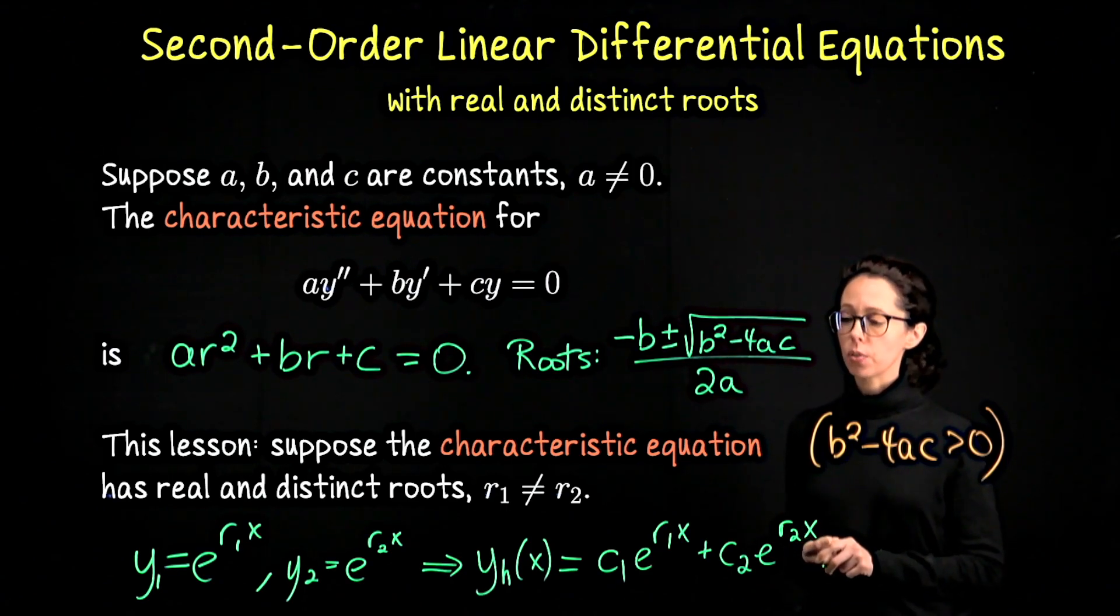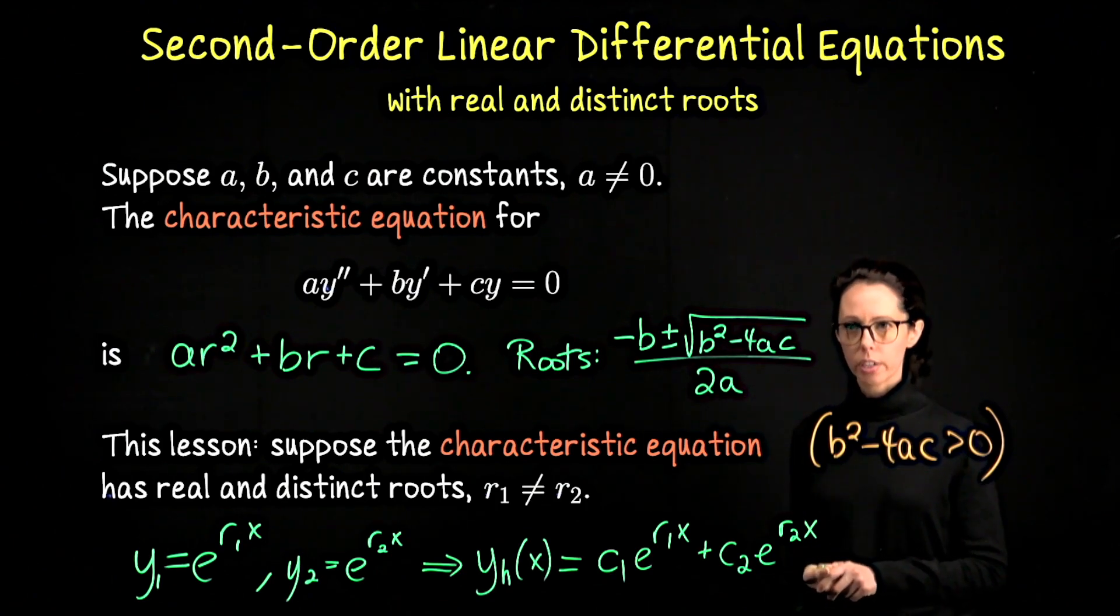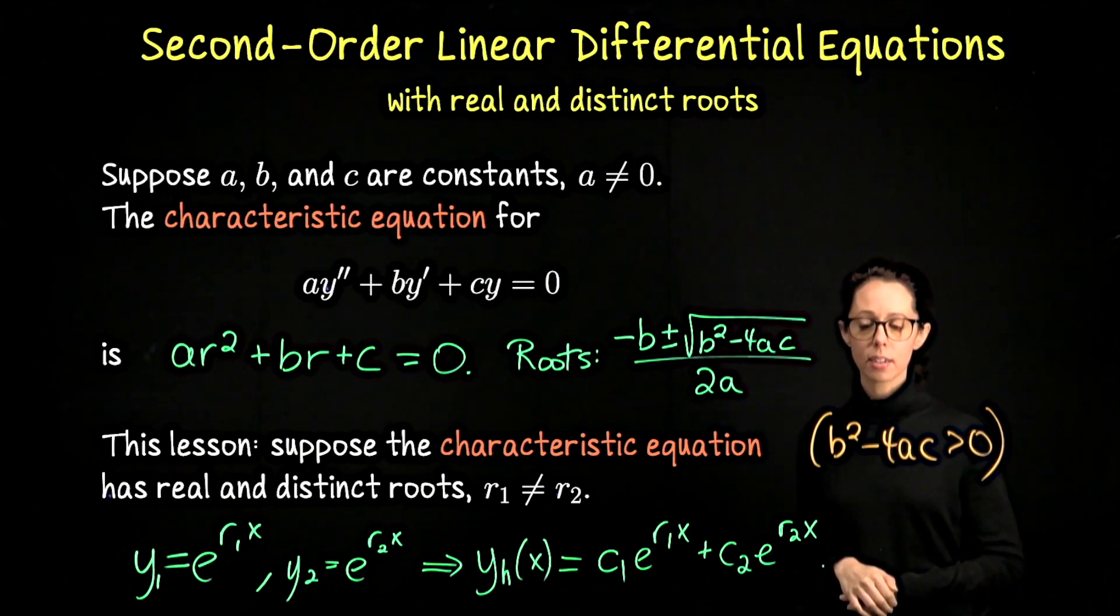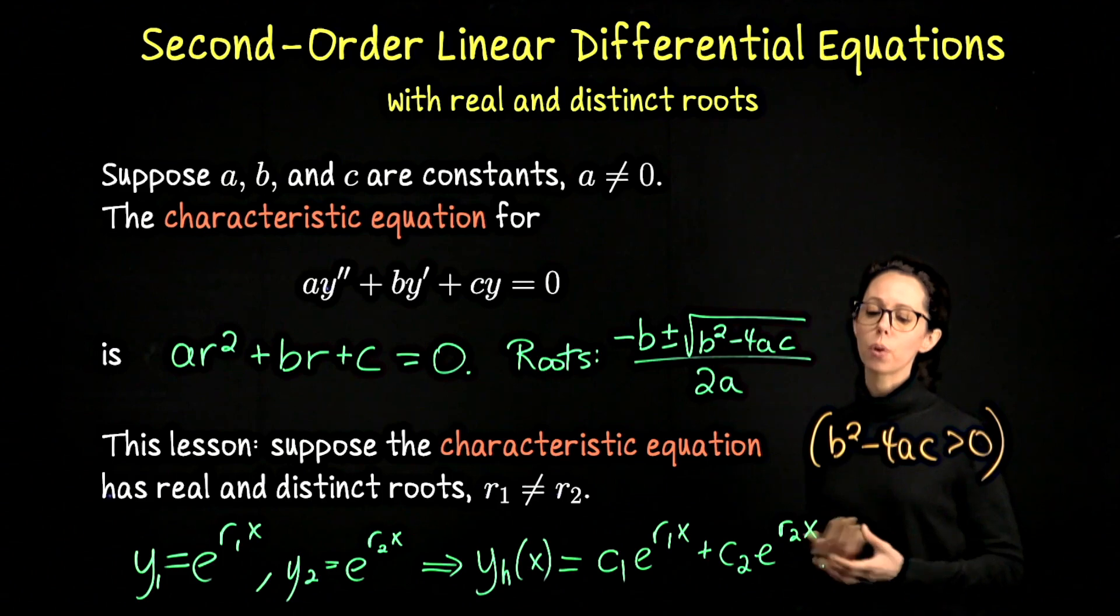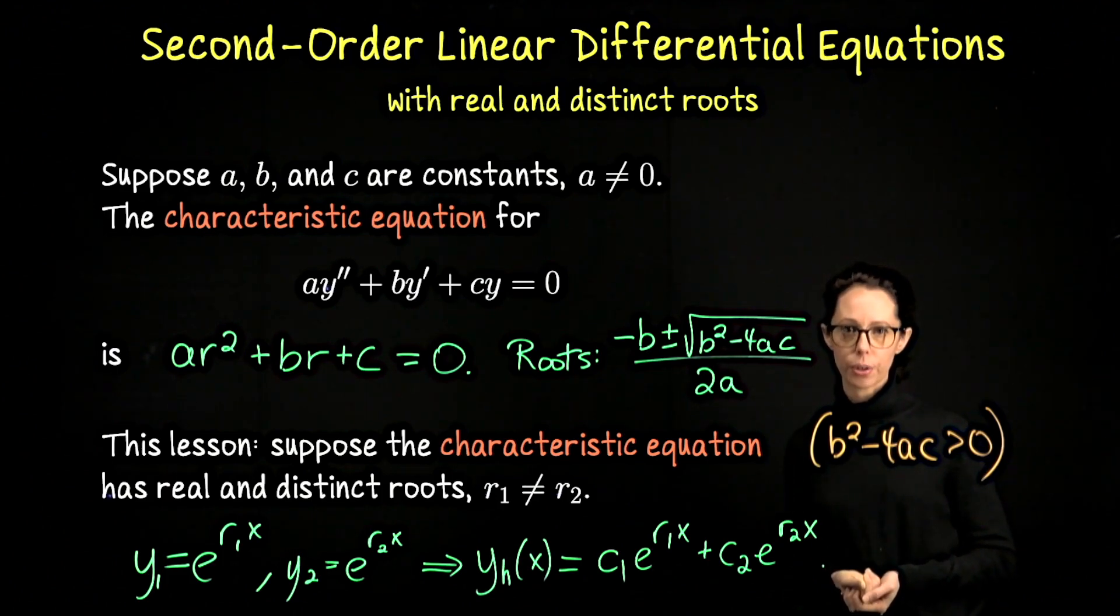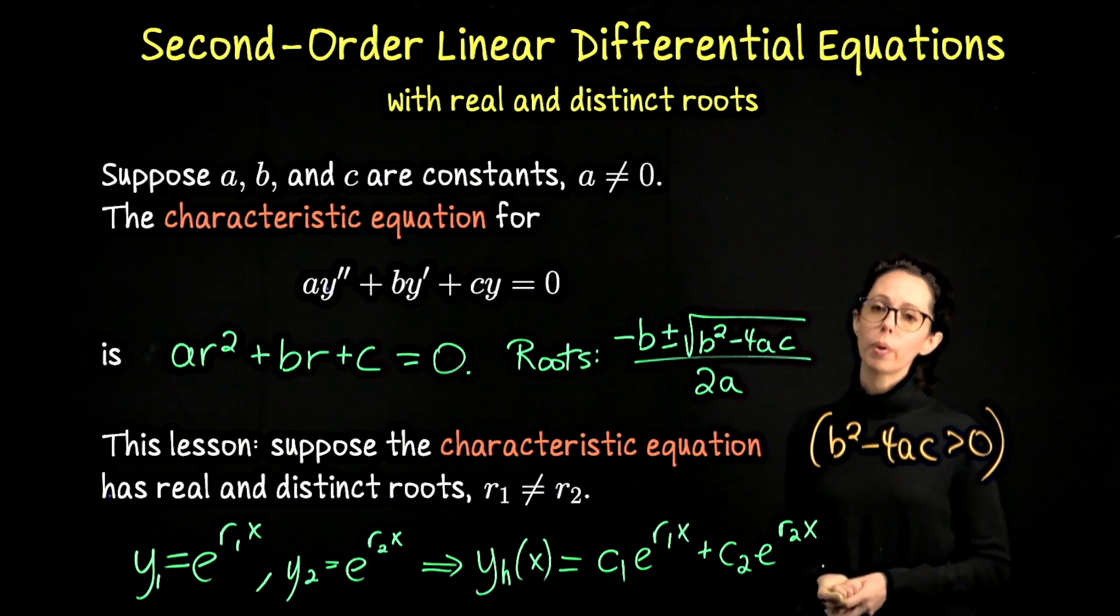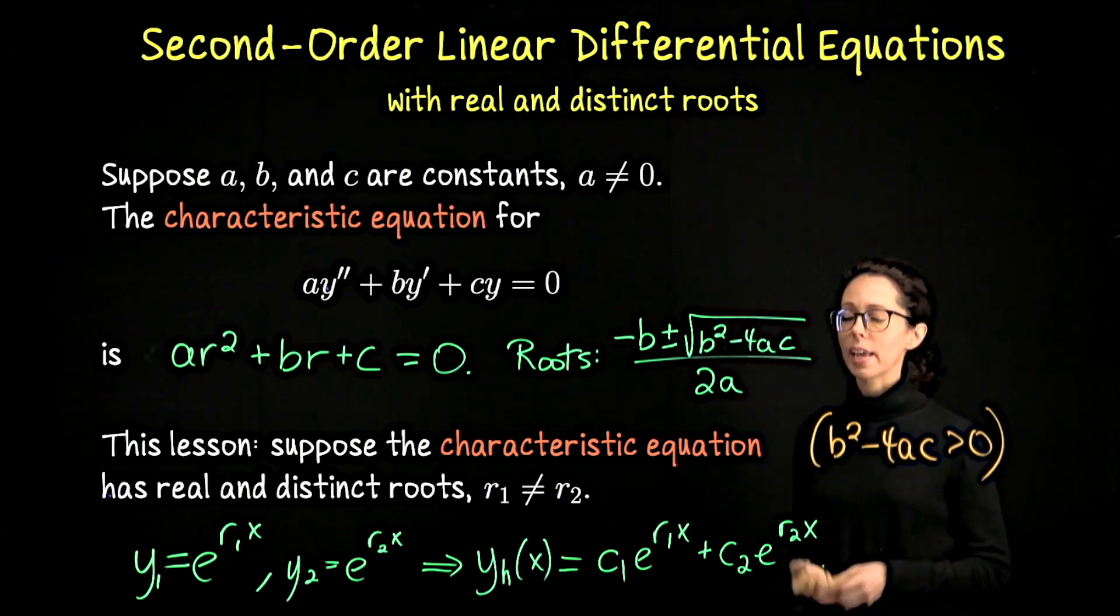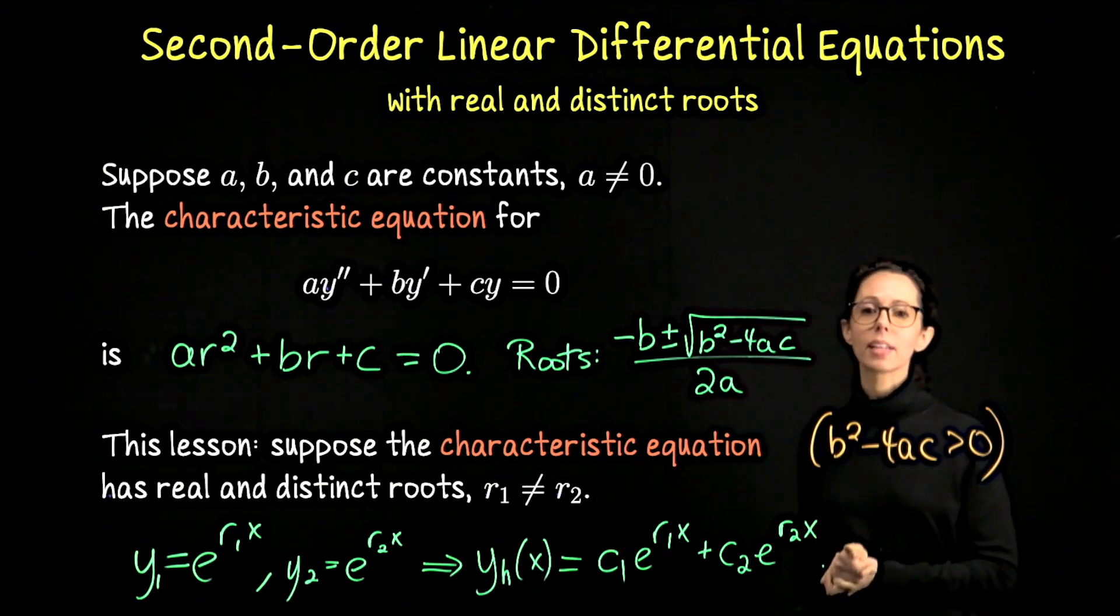So all we're going to do for the rest of this video is one example where we will start with the second order differential equation of this form. Find the roots to verify that they are real and distinct. That will lead us to write down this general form of the solution where we have two unspecified constants, c1 and c2. However, just to take it a little further, we will have initial conditions for our example, which will lead us to finding a solution that solves the initial value problem. So we will remove any unspecified constants.